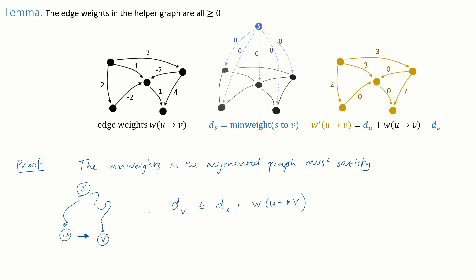And all we need to do is rearrange this equation. Bring the d sub v term onto the other side and we get the expression for the edge weights in the helper graph. Okay, so we've shown that all edge weights in the helper graph have weight above or equal to zero.